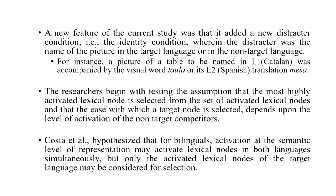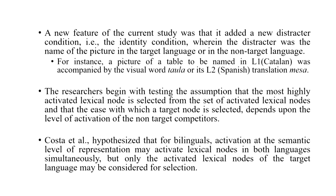A new feature of this study was the addition of a cross-language identity condition. In Catalan, the word for 'table' is 'taula,' whereas in Spanish it is 'mesa.' So in one condition, participants see a picture of a table with the Catalan word 'taula,' and in another, they see the same picture with the Spanish word 'mesa.' The researchers tested the assumption that the most highly activated lexical node is selected from the set of activated lexical nodes in the target language, and that the ease of selection depends on the level of activation among non-target competitors — the more active the non-target competitor, the more difficult selection becomes.